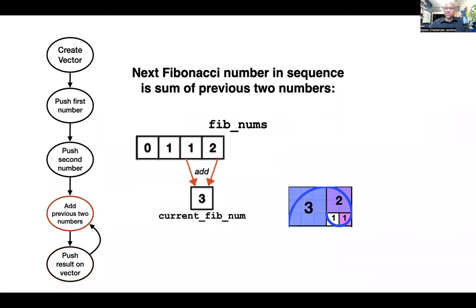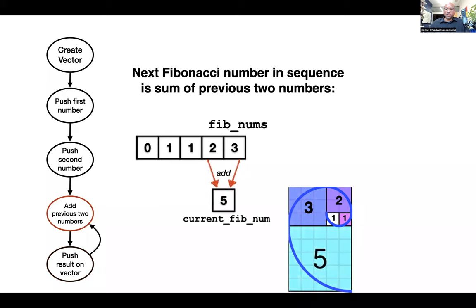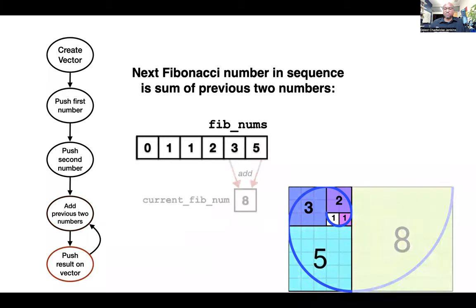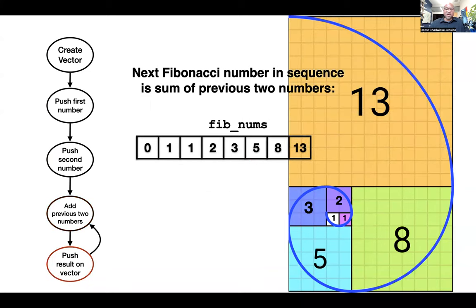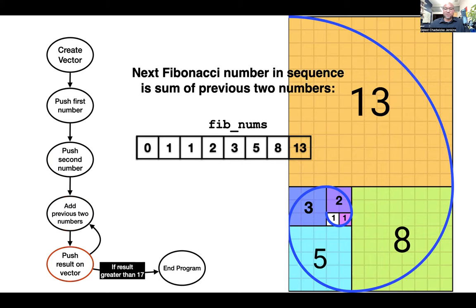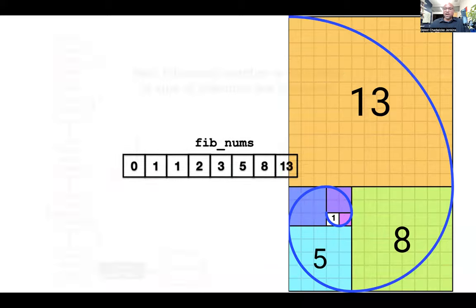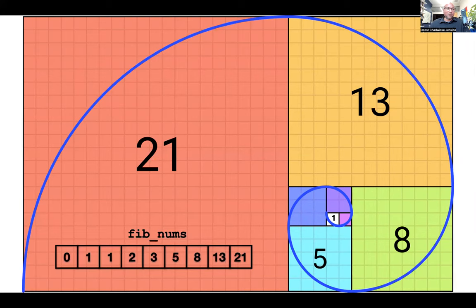I continue: add one and two together, push the result. Add two and three together, push the result. Add three and five together, push. Add five and eight together, push onto the end. At some point I want to stop — in my state machine, if the result is greater than seventeen the program stops. So the next computed value is twenty-one, which exceeds the threshold, giving me a final vector of Fibonacci numbers.